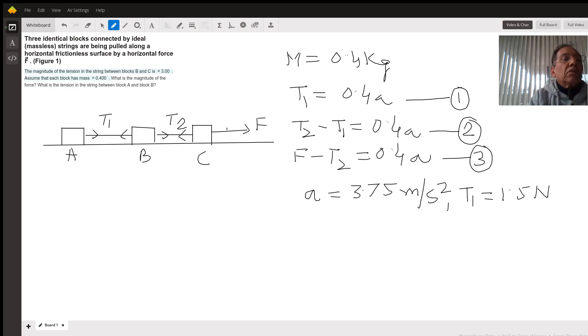The surface is frictionless, and we have to find out the magnitude of the force and the tension on the first string between A and B.